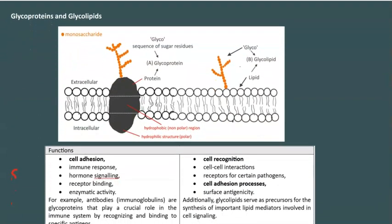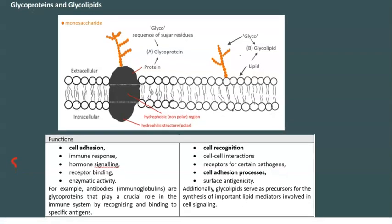Two molecules to look at: glycoproteins and glycolipids. The prefix 'glyco' refers to sugar — forms of glucose, fructose, and so forth. The other part is self-explanatory: sugar attached to proteins, and sugar attached to lipids.